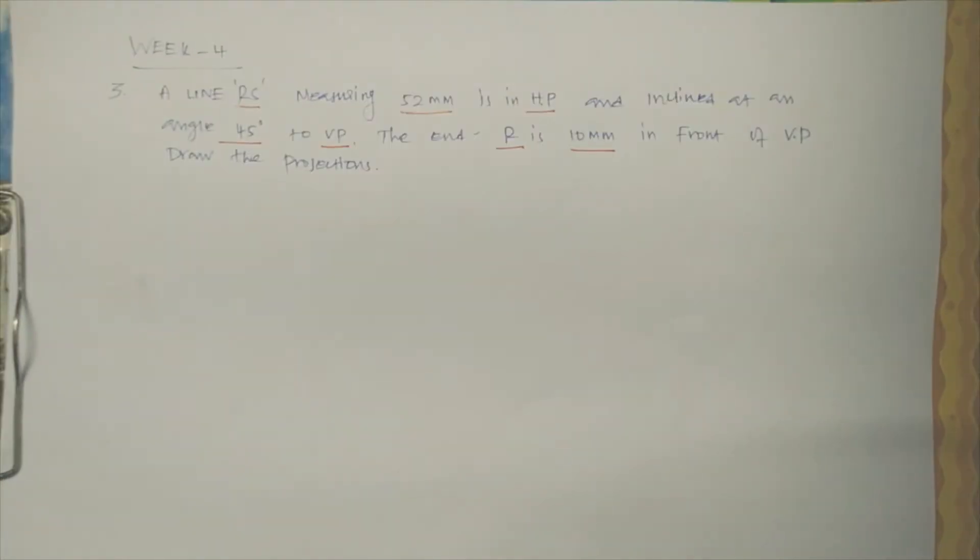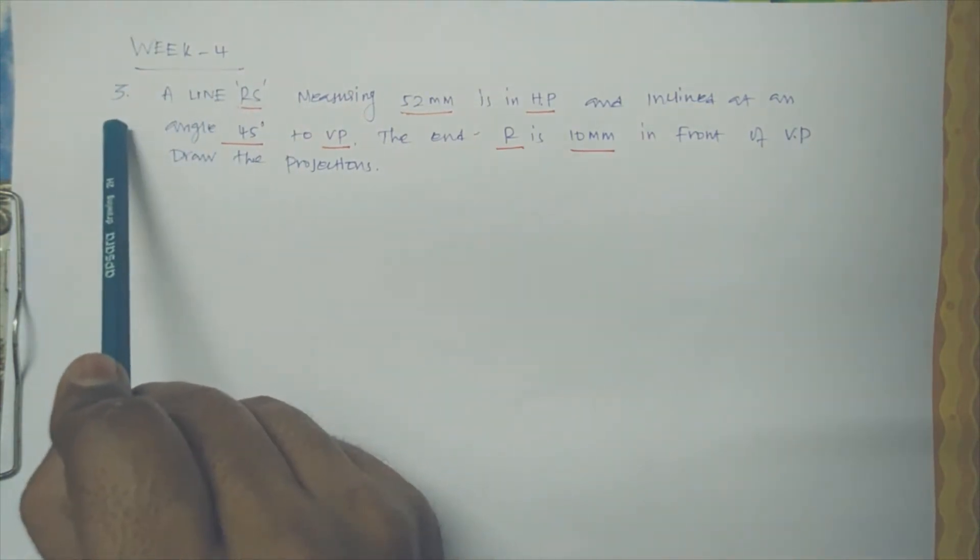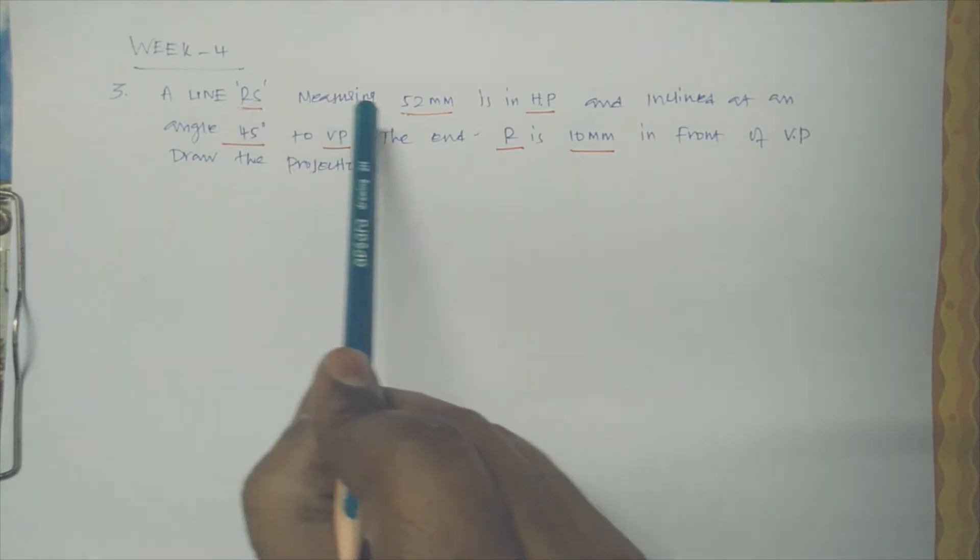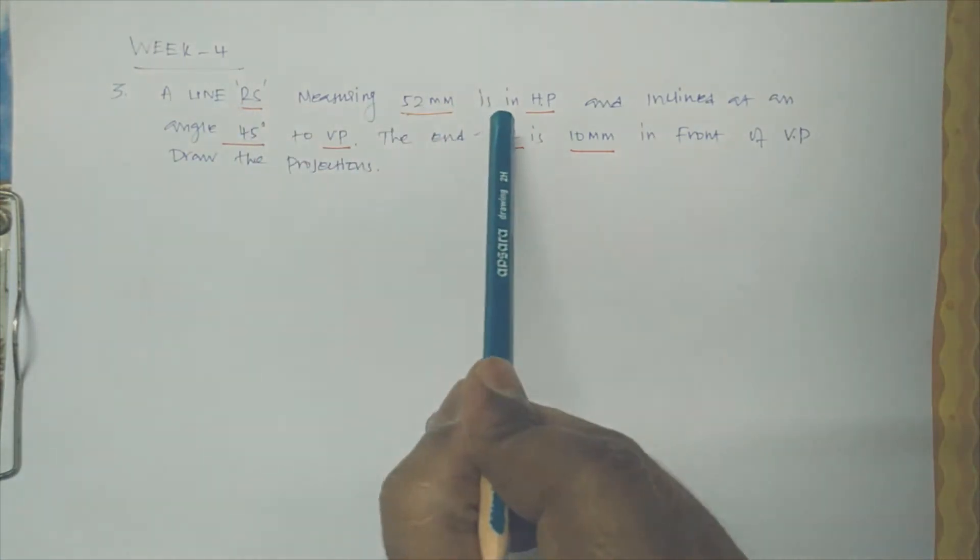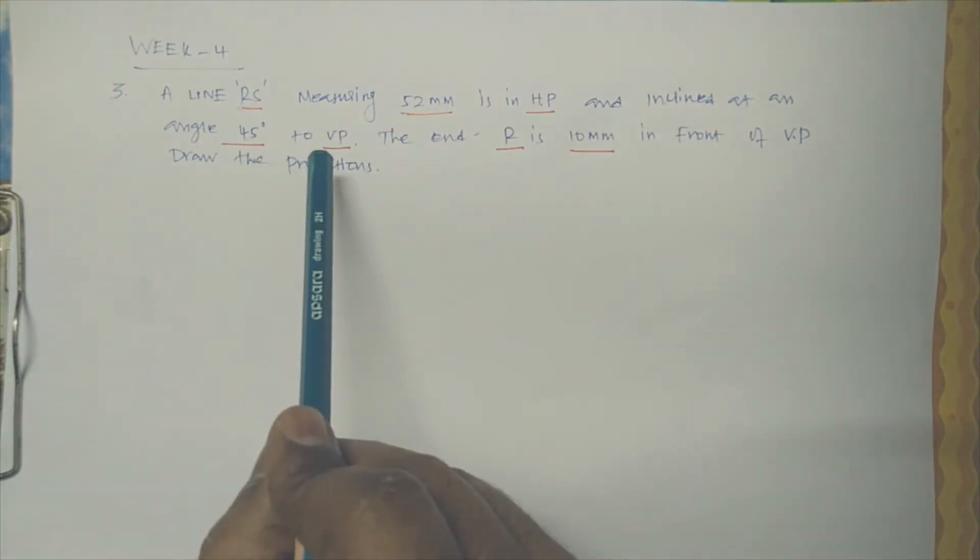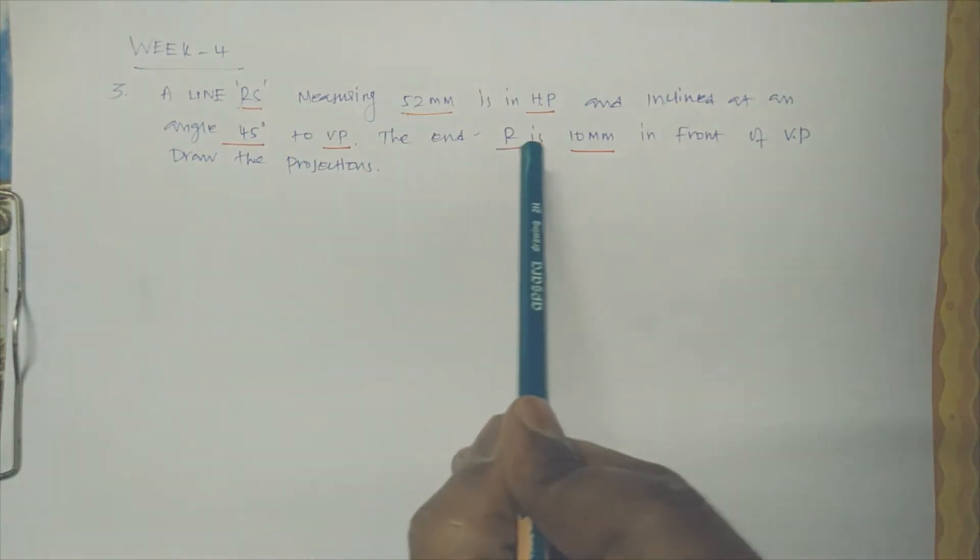Welcome students, so today's topic is from week number four, problem number three: draw the projection of line. Here is specified a line RS measuring 52mm in HP and inclined at an angle 45 degrees to VP. The end R is 10mm in front of VP, draw the projection.